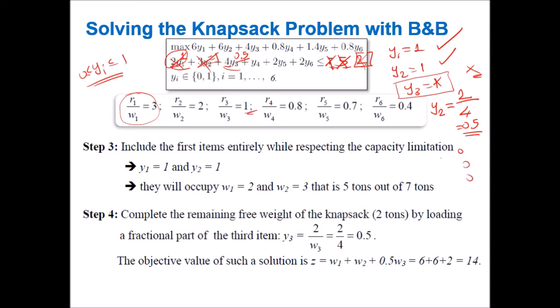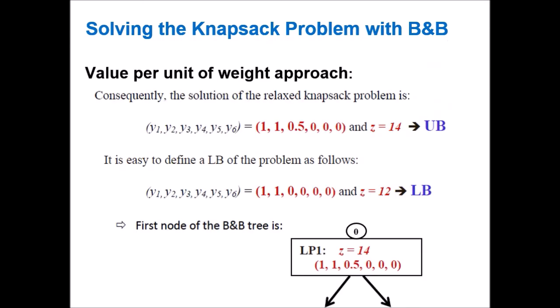Setting y3 = 0.5 means 4 × 0.5 = 2, which satisfies the capacity. All remaining items after this point are set to zero. So the relaxed solution is: y1 = 1, y2 = 1, y3 = 0.5, all others = 0. This is the solution approach we use to solve the knapsack problem within the branch and bound algorithm.